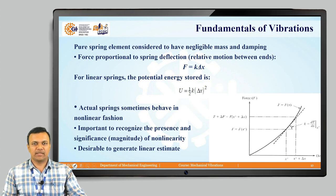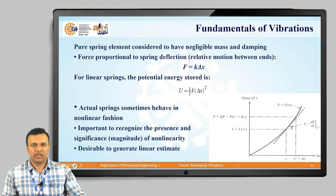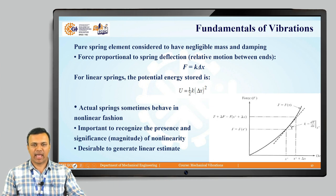The first element of a vibratory system is the spring element. As you can see in the figure, the force is always proportional to the deflection. So the force is proportional to the spring deflection, which can be written as F is equal to K into delta x. If we want to find out the potential energy stored in the linear spring, it can be written as u is equal to 1 by 2 K into delta x square.